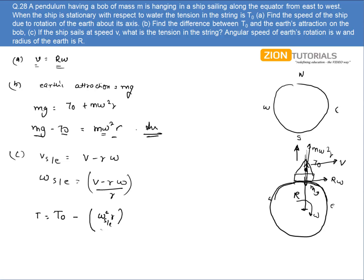And the tension will be decreased by this very amount. So T₀ minus omega_SE - that is (v minus R omega) by R whole square into R. So what I can write is T₀ minus (v² plus R² omega² minus 2vR omega) by R into - M is missing over here - R² R into M.